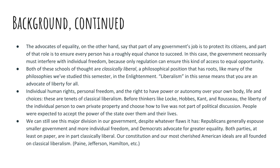The advocates of equality think it's part of the government's job to protect its citizens — that's part of the social contract. The reason we give the government any sort of power, let them put us in jail or tax us, is because they're supposed to protect us. Some people think that part of that role of protection is to ensure that every person, when they're born, has a roughly equal chance to succeed. In this case, the government has to interfere with individual freedom, because only regulation can ensure this kind of access to equal opportunity.